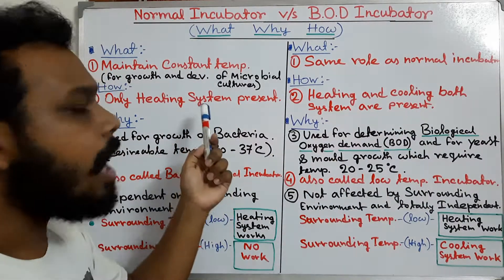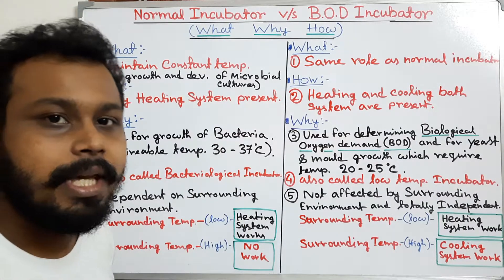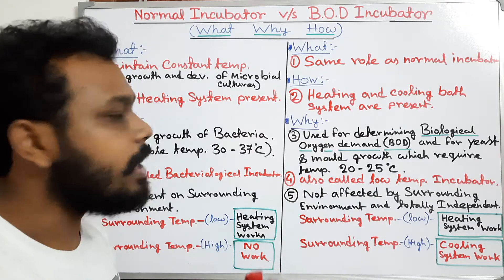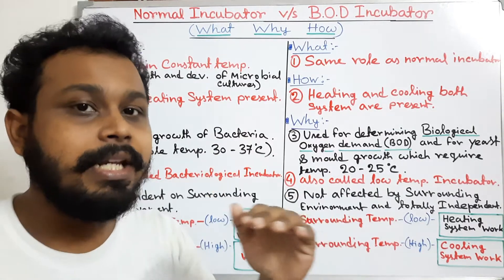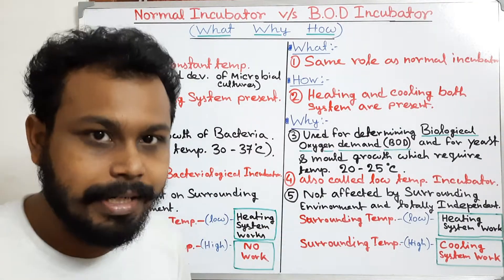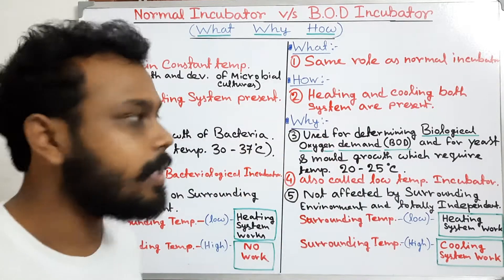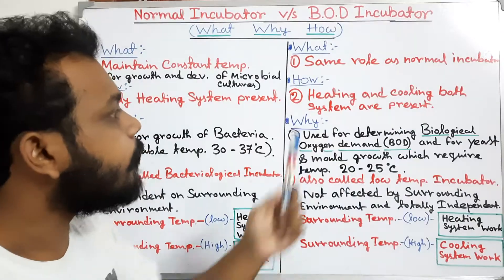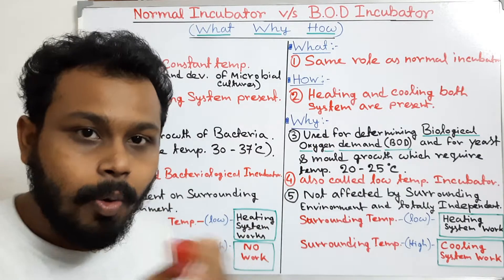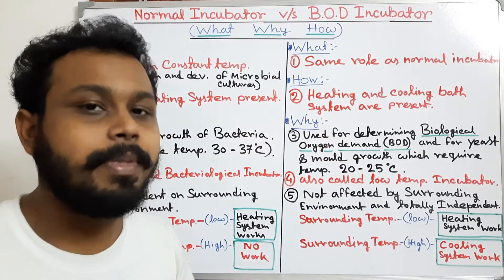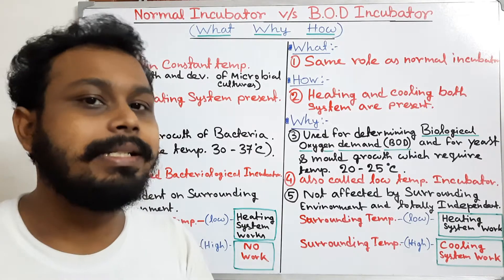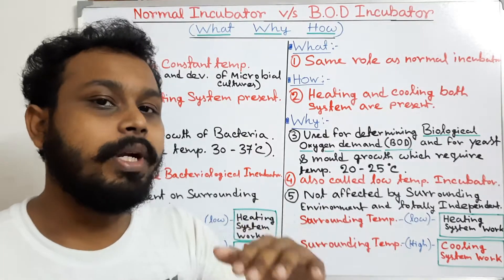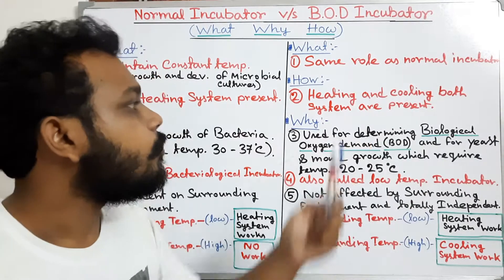When we need a high temperature — for example, if the room temperature is 25 or 27°C and we need an incubation temperature of 37°C — we can use the normal incubator. But when we need a temperature lower than room temperature, for example if we need 20°C and the room temperature is 25–27°C, then we need a cooling system.